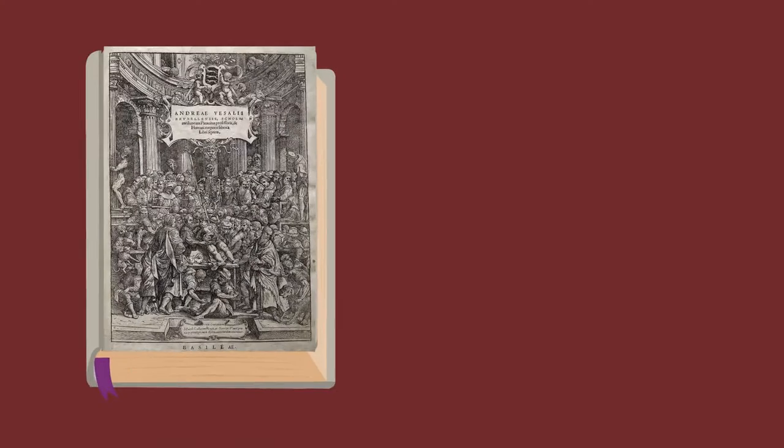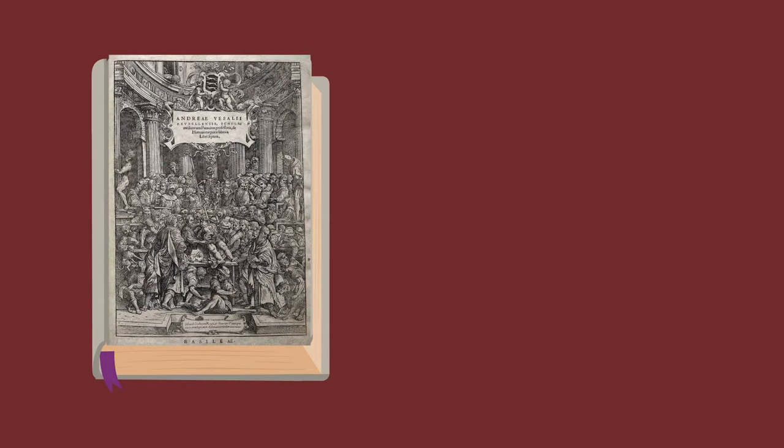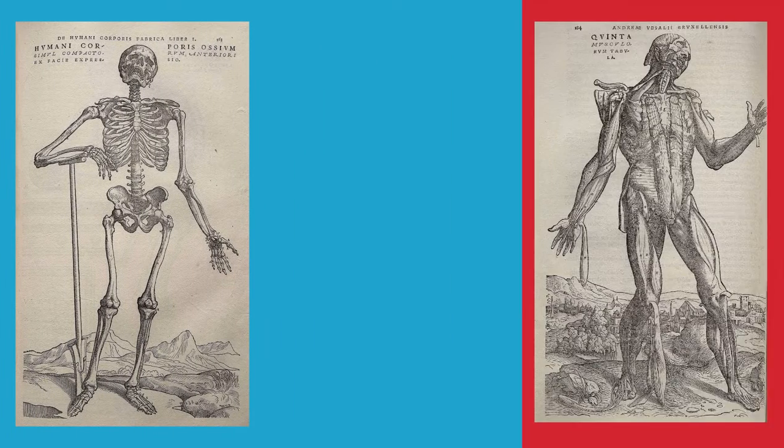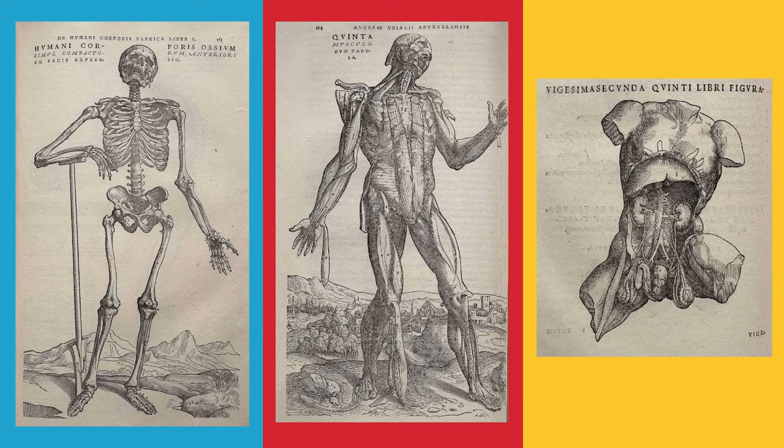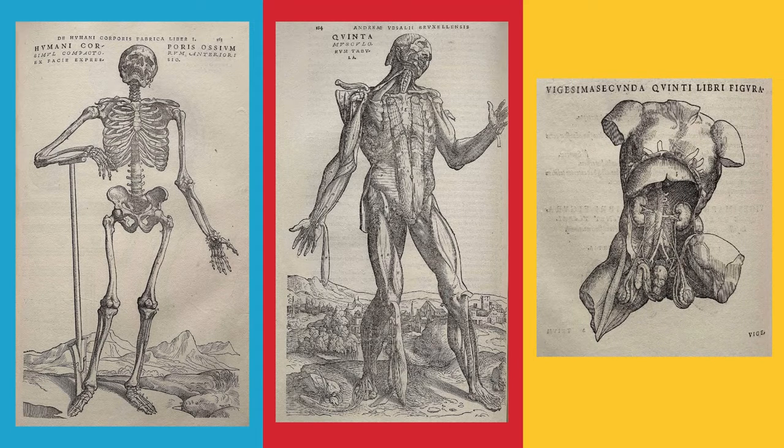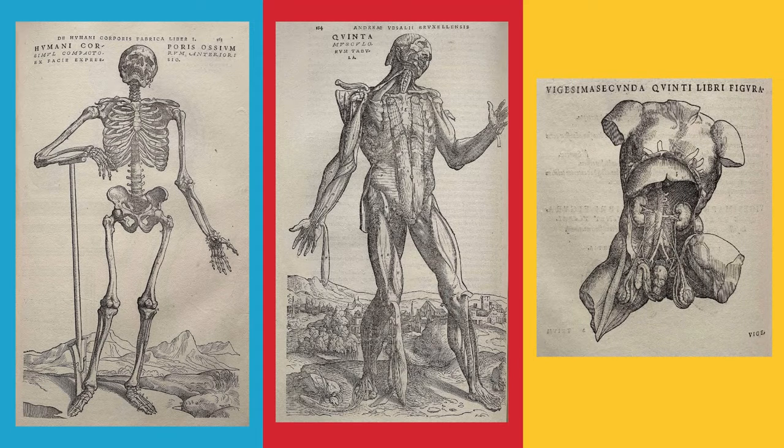In 1543, Vesalius published his groundbreaking work, De Humani Corporis Fabrica, on the fabric of the human body, commonly known as the Fabrica. This monumental book presented a comprehensive and accurate account of human anatomy based on his own dissections and observations.